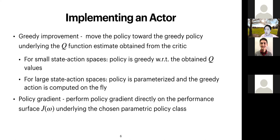For implementing the actor, you can do greedy improvement — move the policy toward the greedy policy underlying the Q function estimate from the critic. For small state and action spaces, you can use policy improvement with argmax of the Q value. For large state-action spaces, since your policy is parameterized, the greedy action is computed on the fly based on the current parameterization.